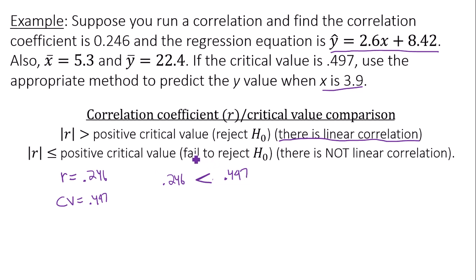So that means in my hypothesis I would fail to reject H₀, but the important thing is that means there is not linear correlation. So guess what we can't use in this example? We cannot use this linear regression equation.